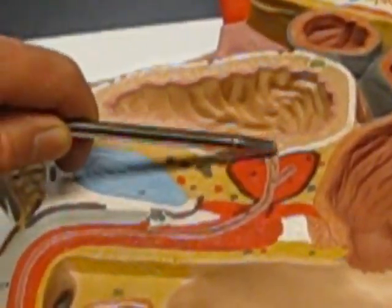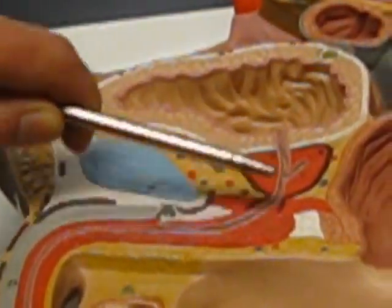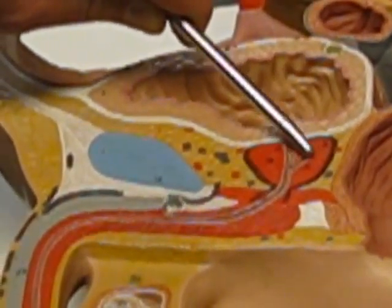There's the prostate gland, the urethra coming down right through the middle of it, and that's the ejaculatory duct right there.